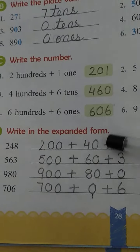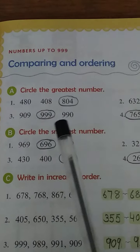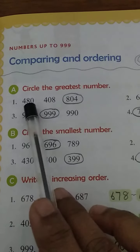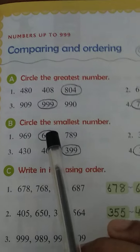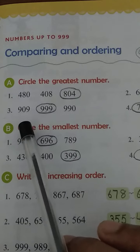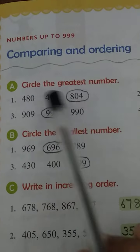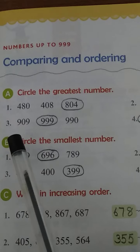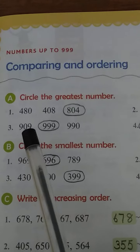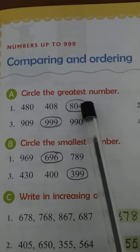Similarly, you can solve the remaining questions. Now coming to page number 29, we have the topic comparing and ordering. When you are given a set of numbers, you have to find either the greatest or the smallest number among them. Let's take Part A, first question — three numbers are given: 480, 408, and 804. You have to find which is the greatest number.